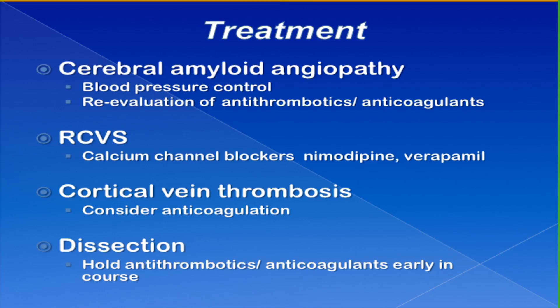For treatment: for amyloid angiopathy, there's not much we can offer — judicious blood pressure control and careful reevaluation of antithrombotic and anticoagulant regimens. For RCVS, we use calcium channel blockers. For cortical vein thrombosis, likely anticoagulation. If you have a dissection with a convexity hemorrhage, you may want to hold antithrombotics in the first few days, let things settle down, and then depending on preference use antithrombotics or possibly anticoagulants.